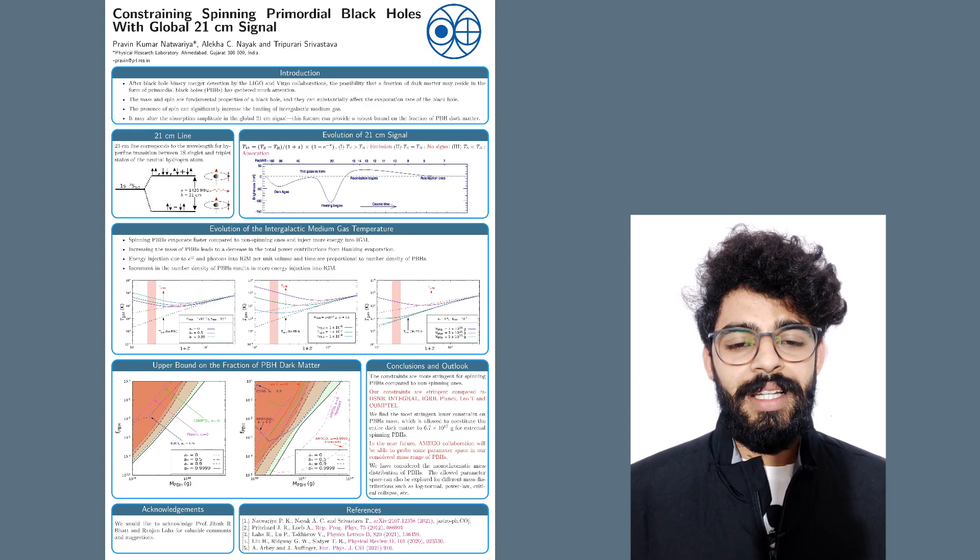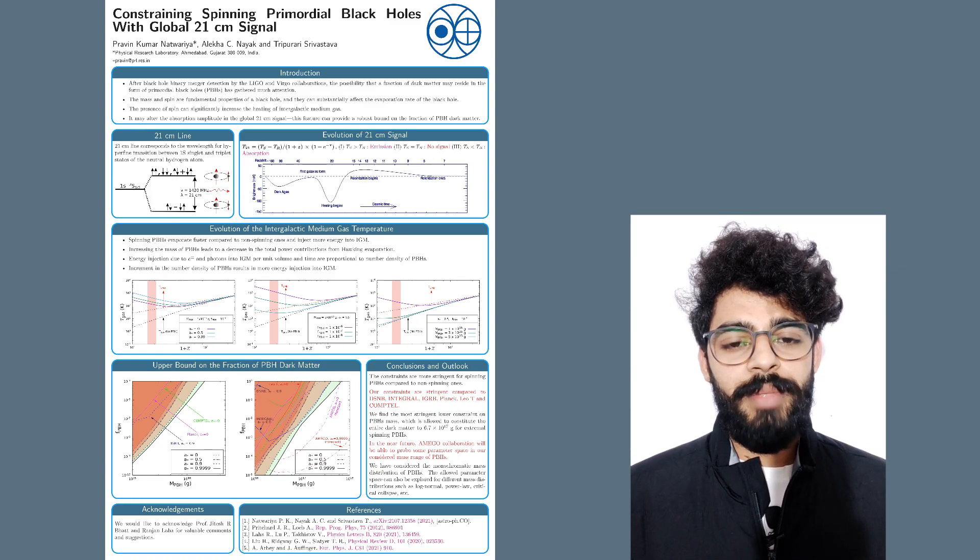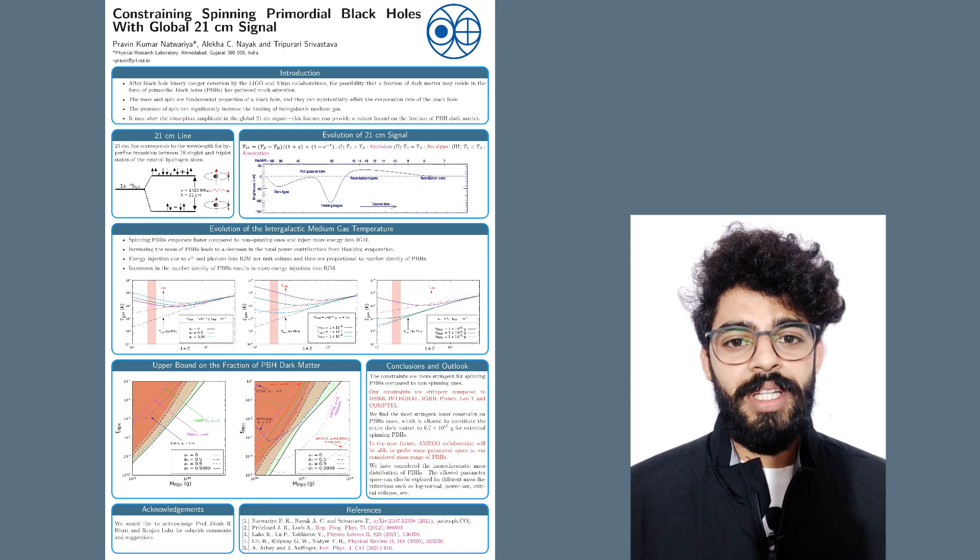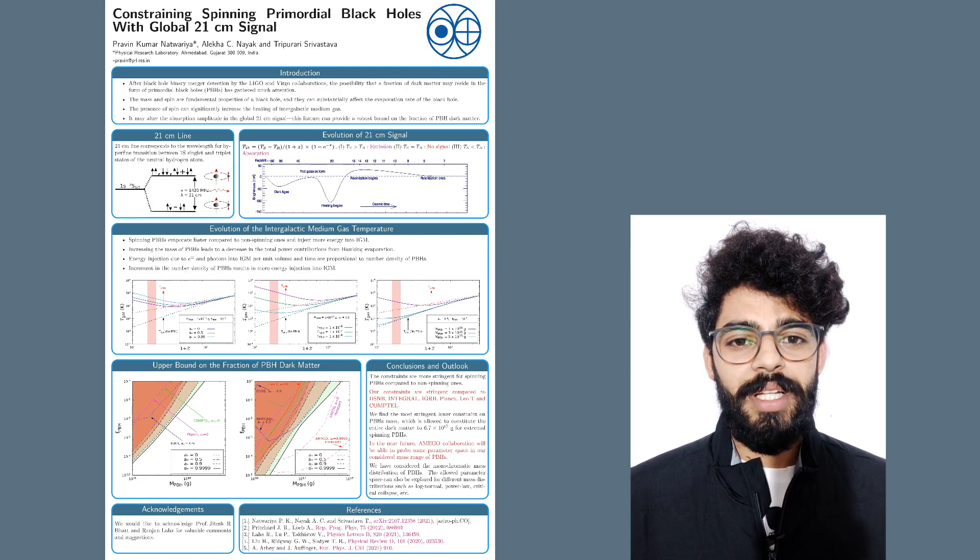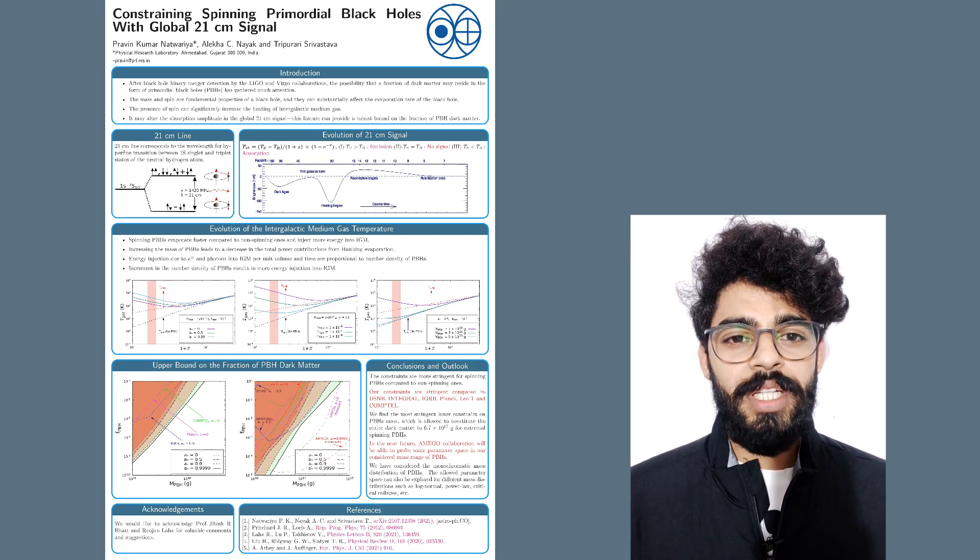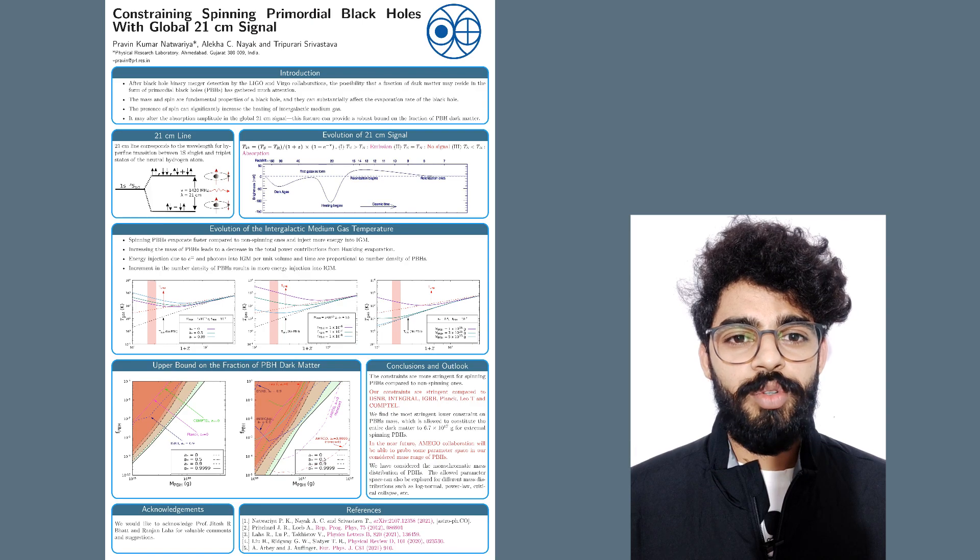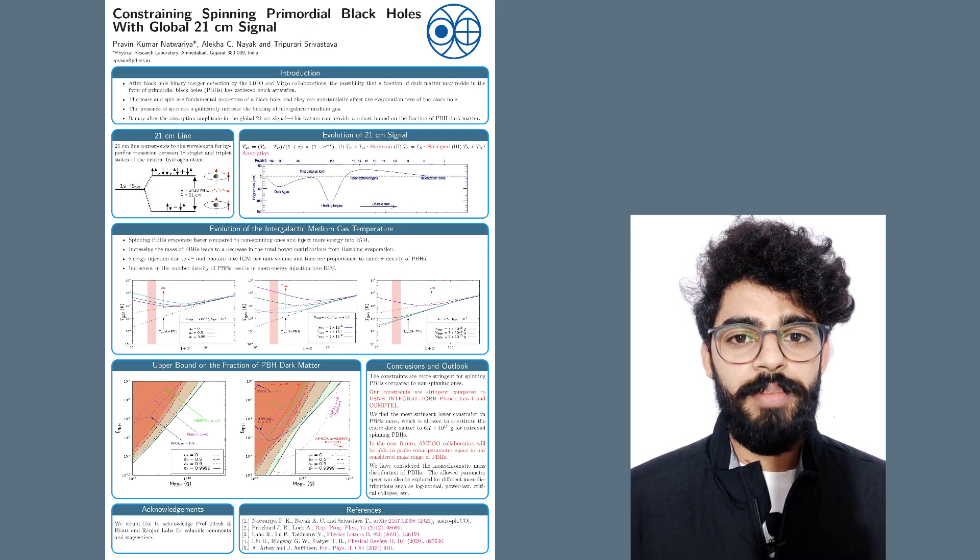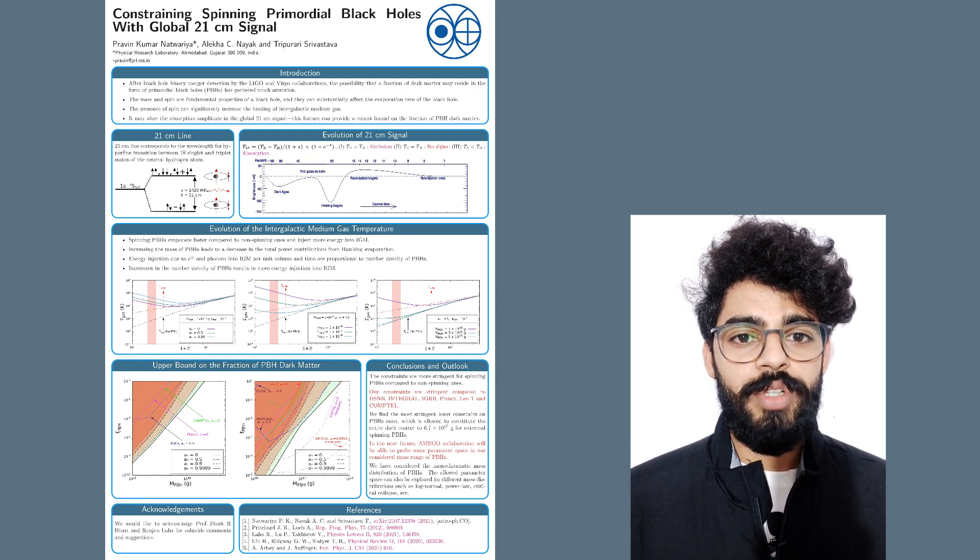Observation suggests that 85% of the total matter component in the universe is dark matter, and there is a possibility that some fraction of the dark matter may reside in the form of primordial black holes. The global 21 cm signal appears to be a treasure trove to study physics at the time of Cosmic Dawn era.